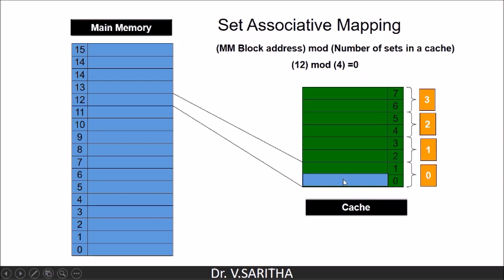In set 0 we have block 0 and block 1, and we can place the incoming block anywhere if both are free. If block 1 is occupied we place it in block 0. If block 0 is occupied we place it in block 1. If both are free, we choose randomly within set 0.